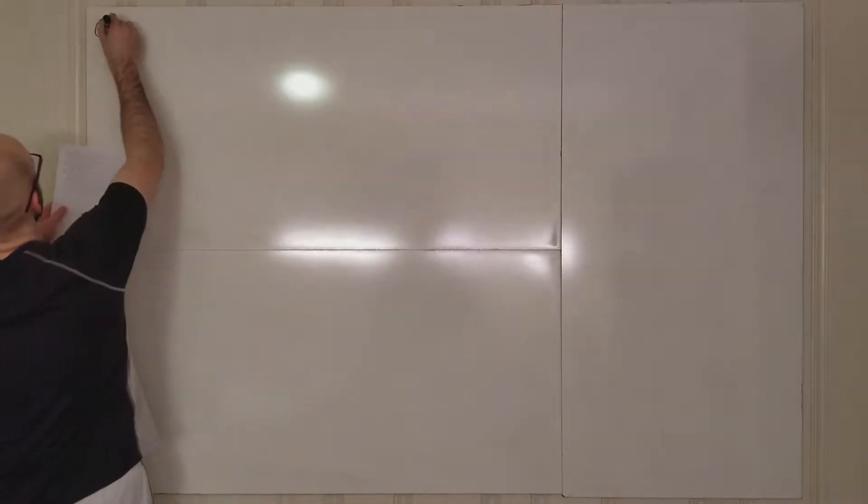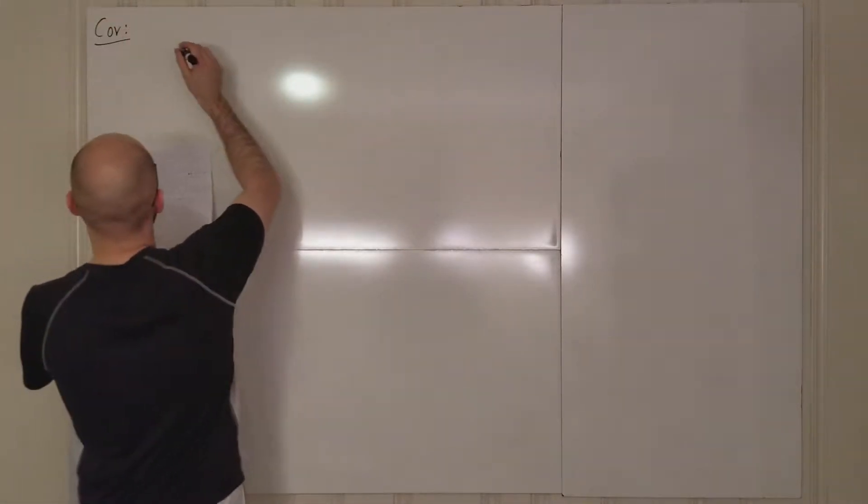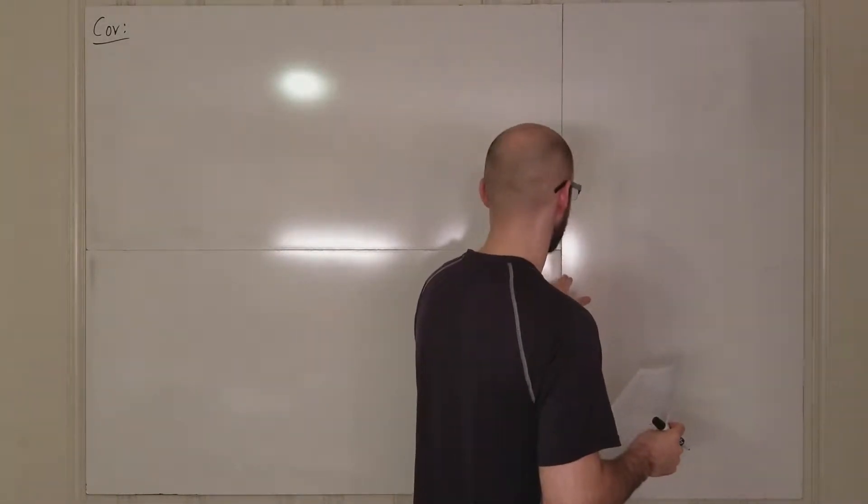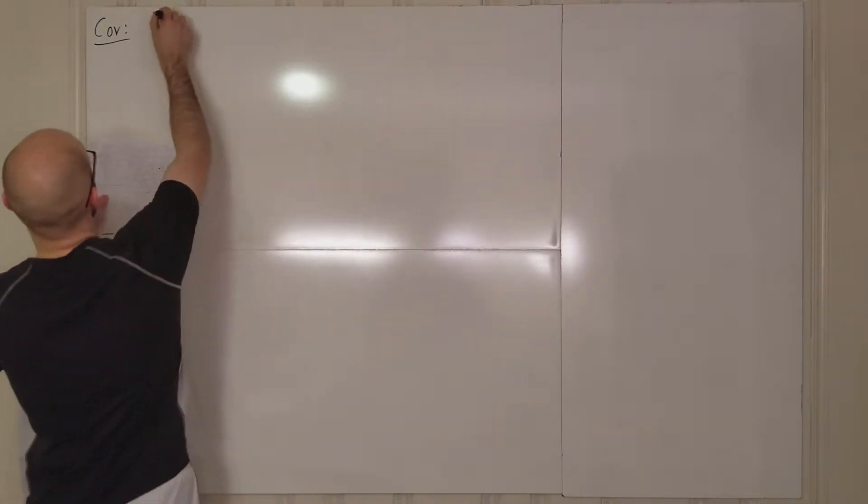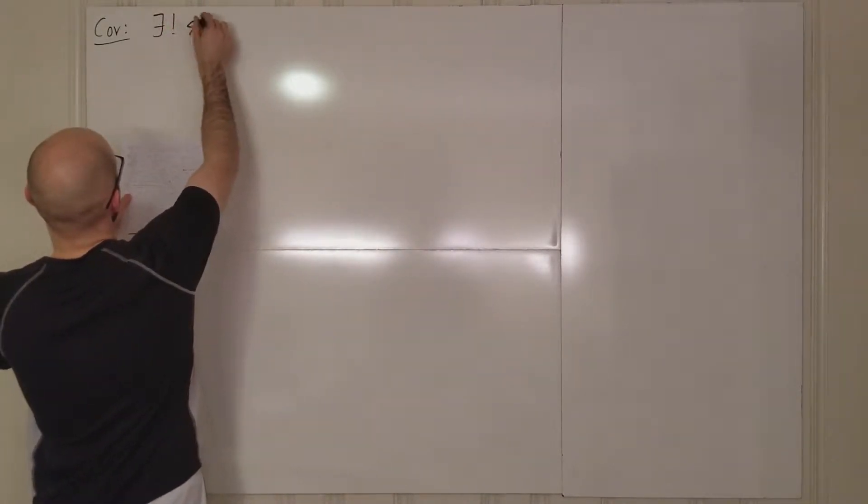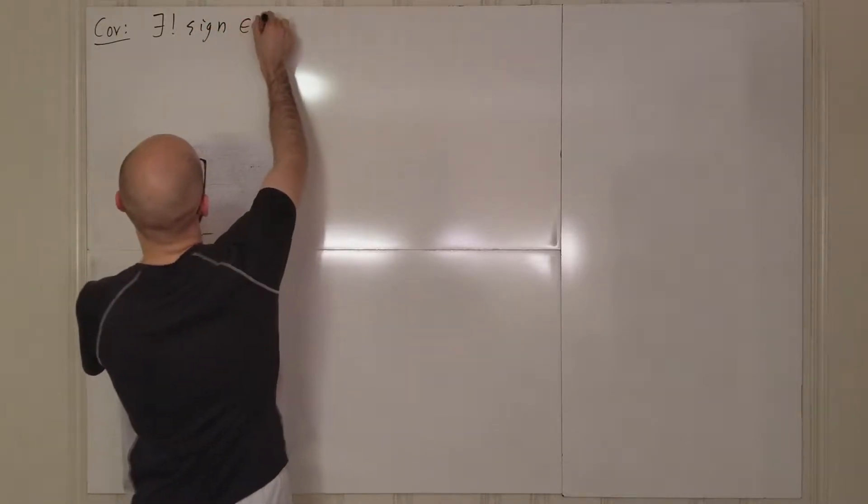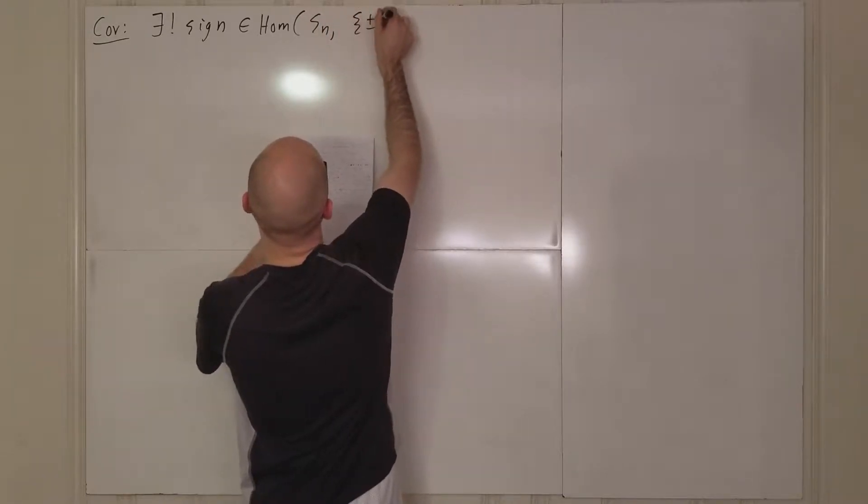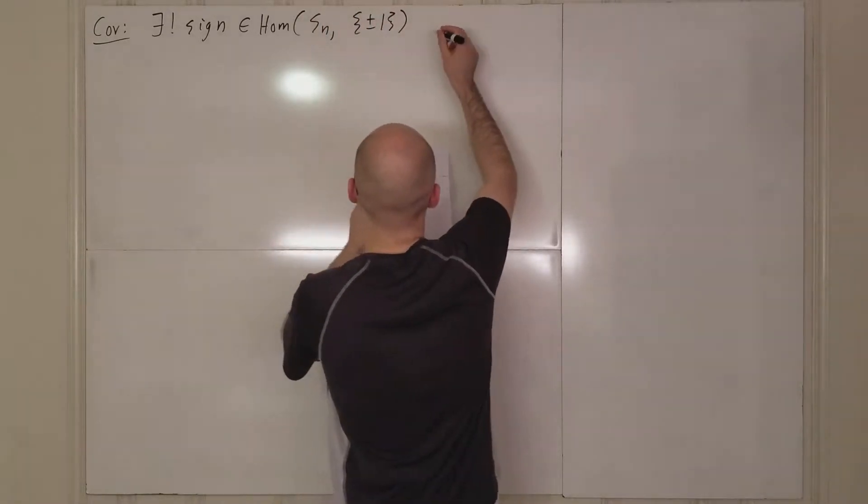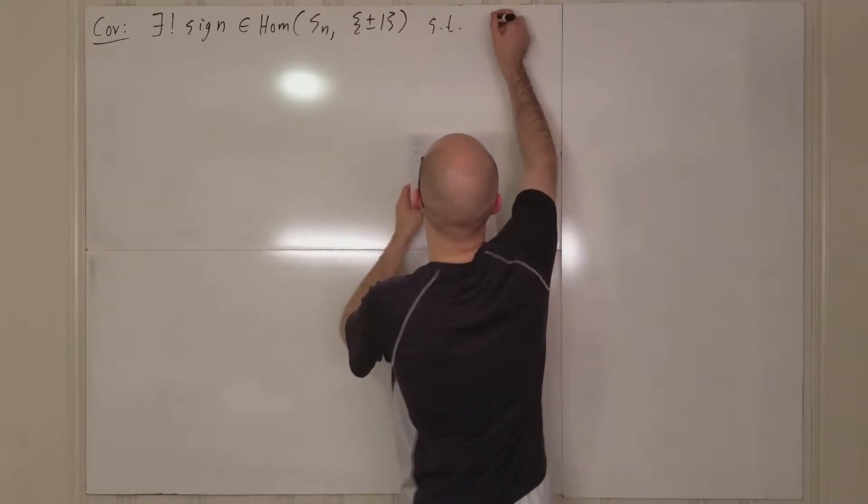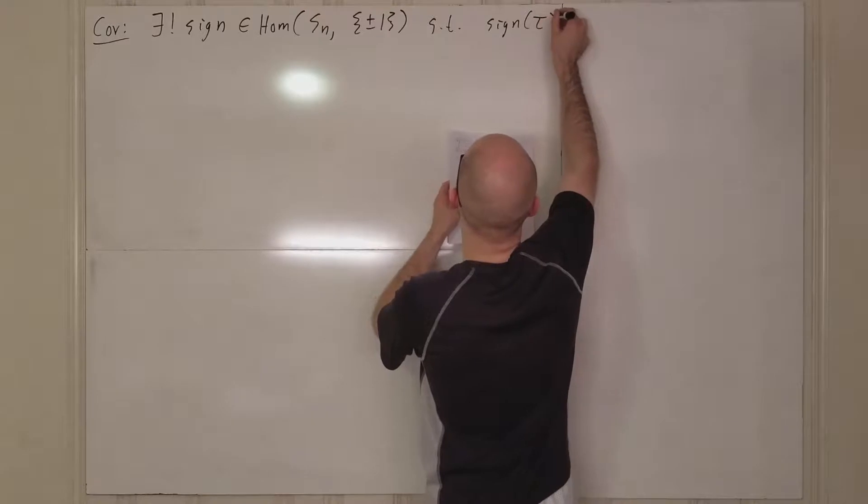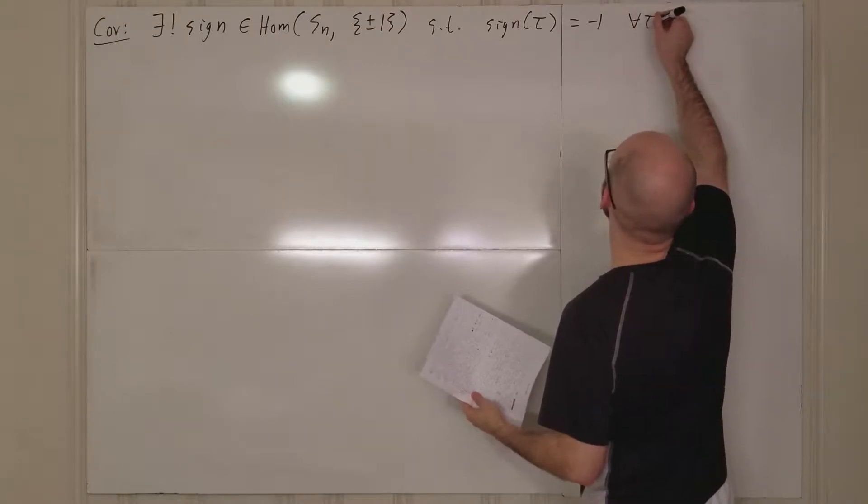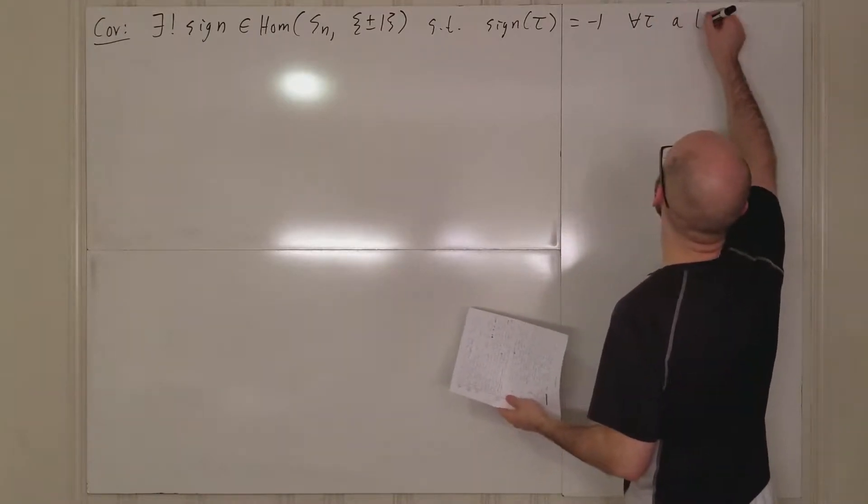So as a corollary to that, there exists a unique, we'll call it sign, this is a homomorphism from Sn to the group plus and minus one under multiplication, such that sign of tau is going to be minus one for all tau transposition.